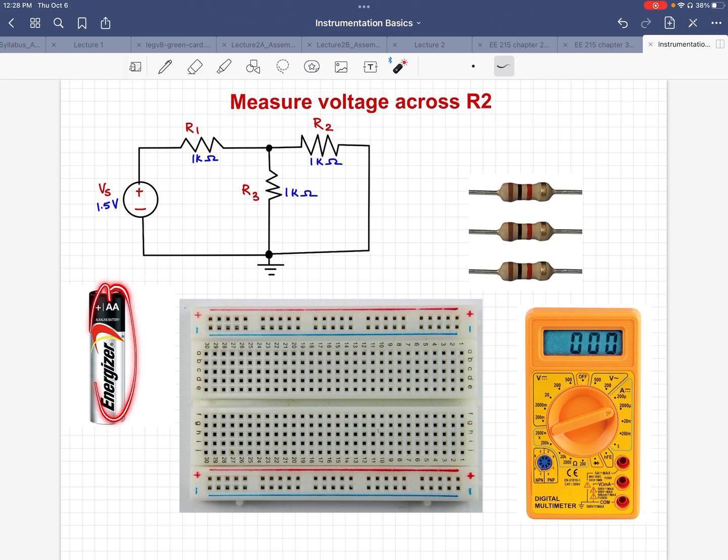So we are using a battery here to represent VS, an independent voltage source in our circuit. We have three resistors R1, R2, R3. Let's suppose this is R1, this is R2, this is R3. They are all one kilo ohm each, and I know that is right because this is a brown-black-red resistor with gold indicating tolerance of five percent, plus or minus five percent.